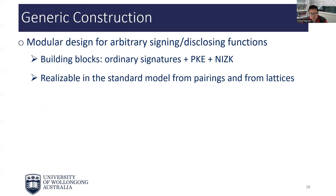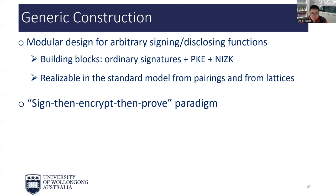In terms of constructions, we obtain a generic construction of MPS for arbitrary signing functions and arbitrary disclosing functions. The construction relies on commonly-used cryptographic building blocks, namely ordinary signatures, CCA-secure public-key encryption, and non-interactive zero-knowledge proofs for general statements. As a feasibility result, the construction can be realized in the standard model from pairings via the Groth-Ostrovsky-Sahai proof system, and from lattices via the Peikert-Sahai proof system. Our construction follows the sign-then-encrypt-then-prove paradigm, which is typically used for designing group signatures.